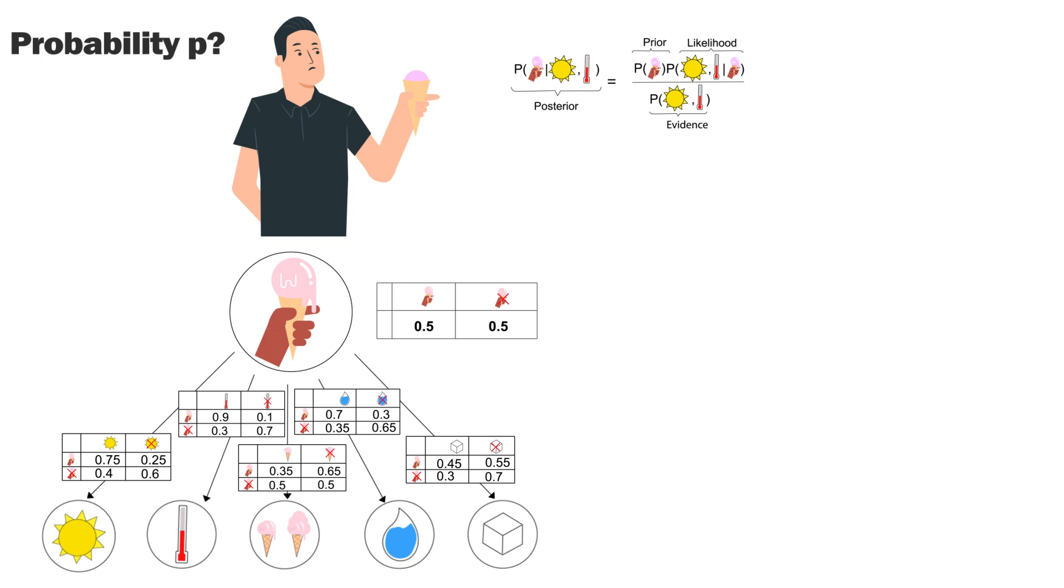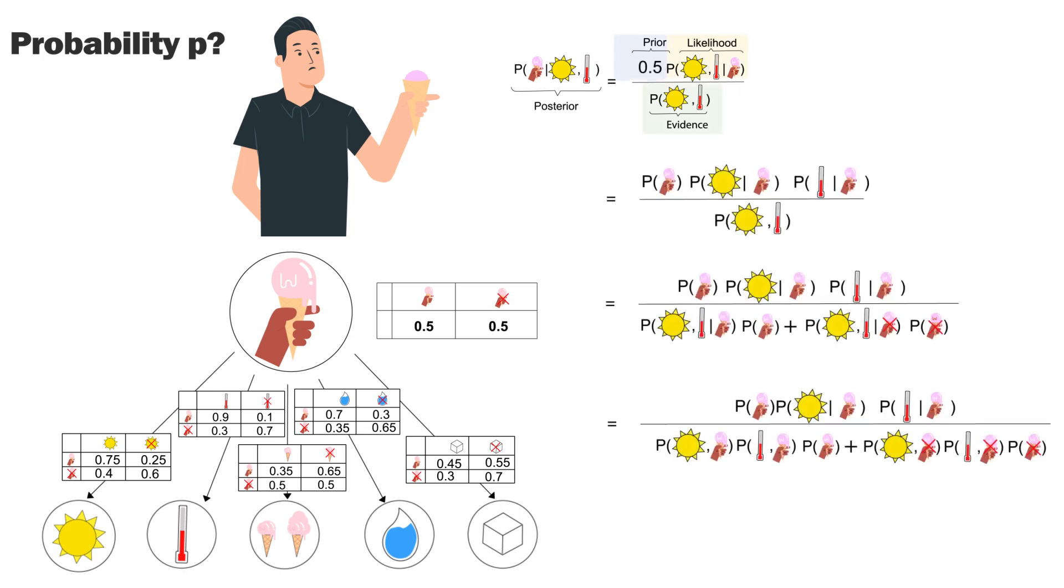Now, even if we only observe sunlight and temperature, we can find the probability of melting within five minutes by simply ignoring the other factors and use the conditional independence as follows. Transforming the equation and inserting the corresponding probabilities from the tables, giving us a probability of 42.5%.